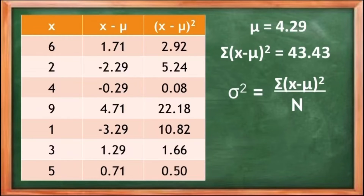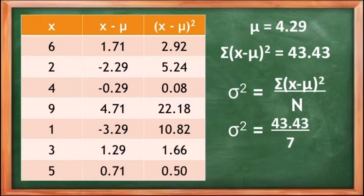After solving for the summation of (x − μ)², we divide it by N to get σ². We have 43.43 divided by N, where N = 7 because there are 7 values in the data set. So 43.43 ÷ 7 = 6.2. Therefore, σ² — the population variance of the data set — is equal to 6.2.